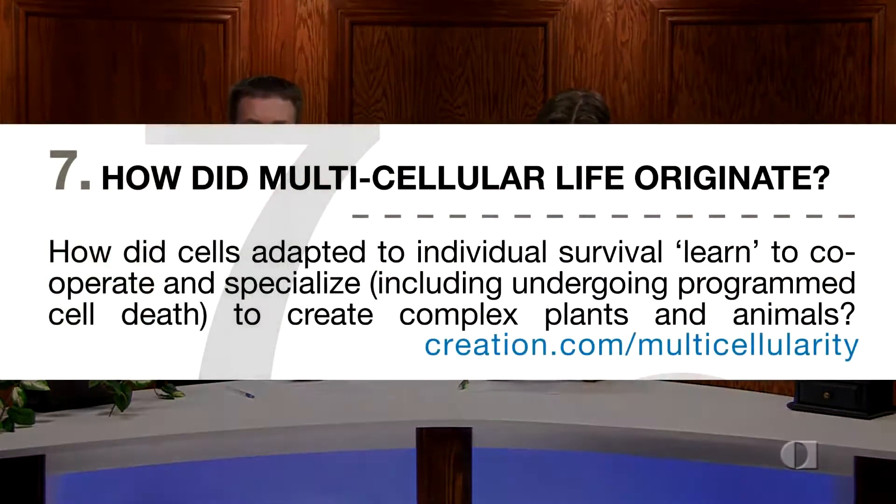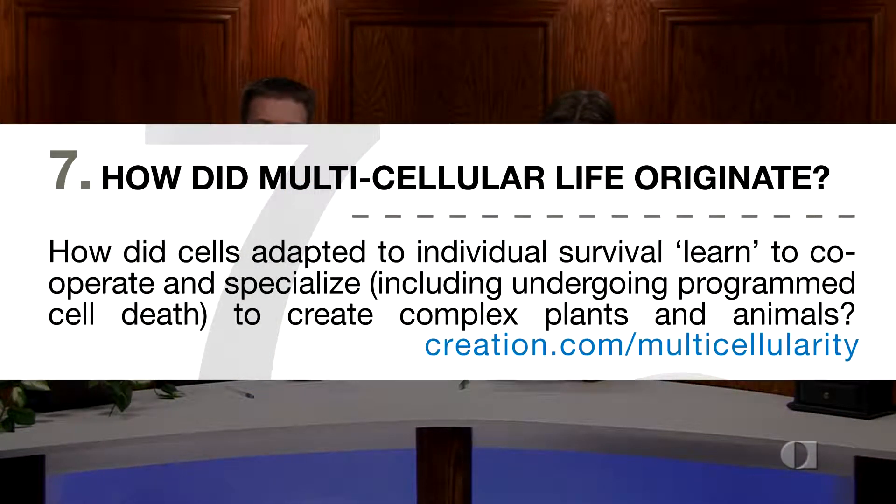So we're continuing today on our Question Evolution Campaign flyer, 15 questions for evolutionists. Today we're going to do question number seven: How did multicellular life originate? Just going to read out of the pamphlet here. How did cells adapted to individual survival learn to cooperate and specialize, including undergoing programmed cell death, to create complex plants and animals?